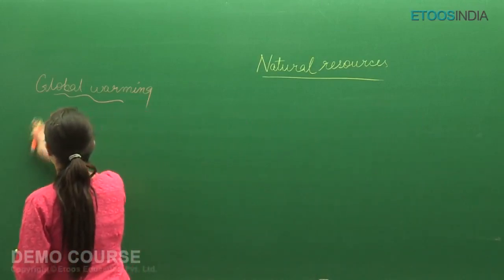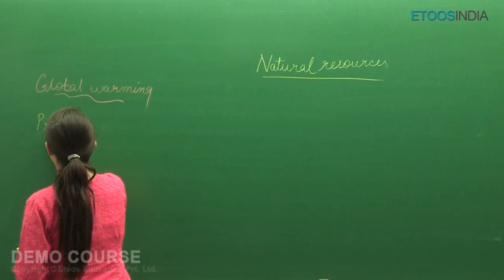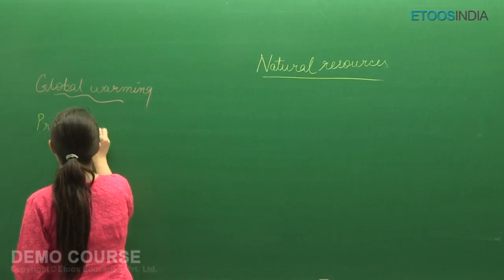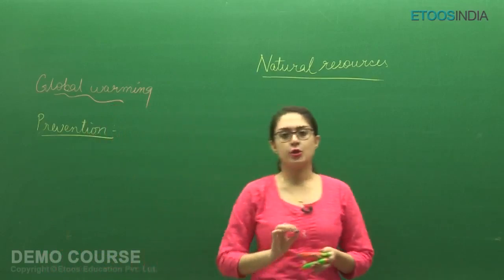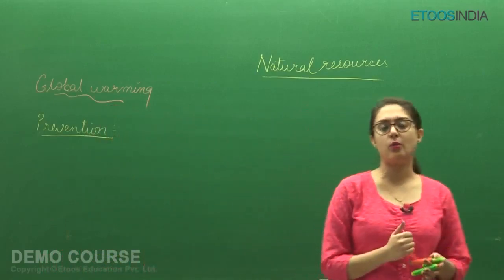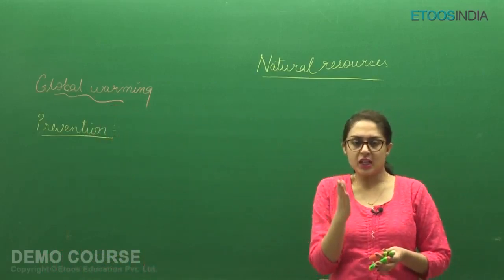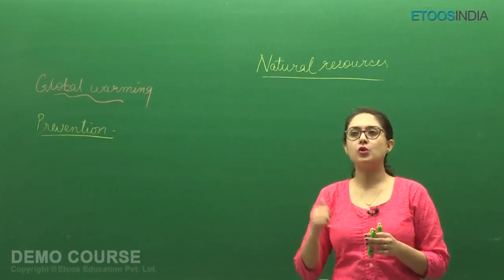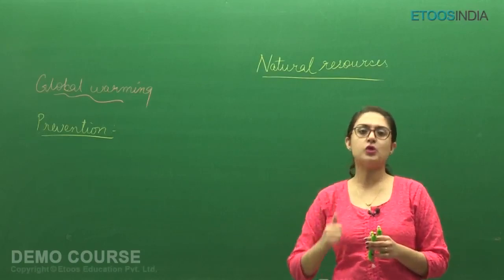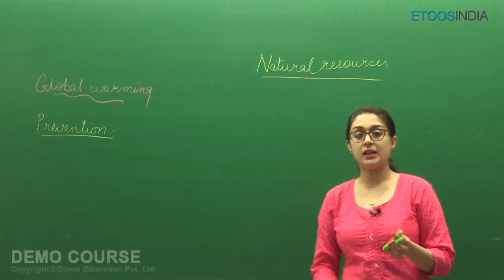So prevention - that point is left actually. We have not completed in last lecture, going to complete in today's lecture. What measures should humans take to prevent this global warming? Because already the greenhouse effect is continuously showing, but to prevent or to decrease its effect, some good measures should be taken.